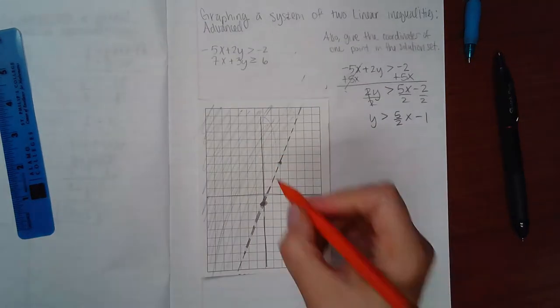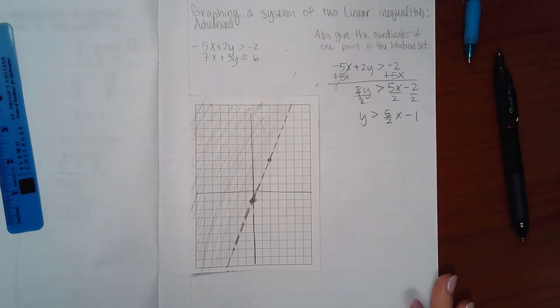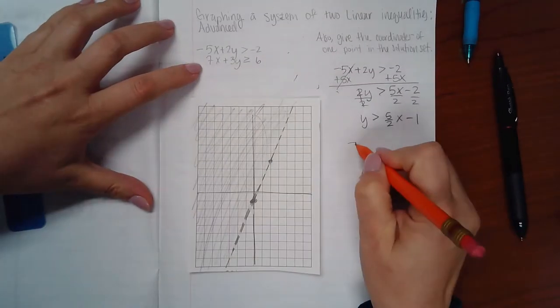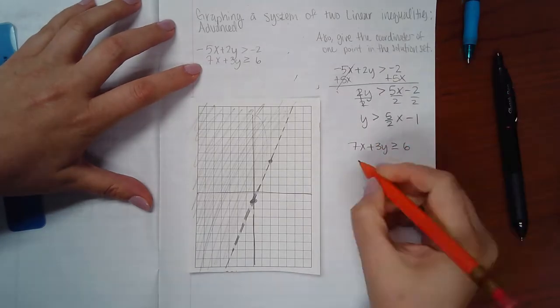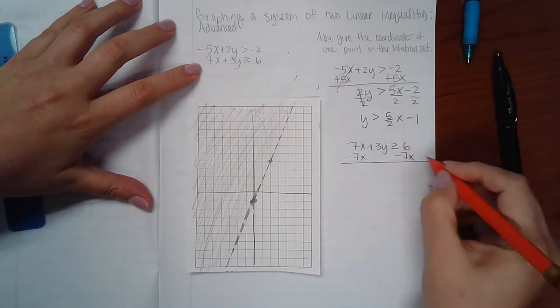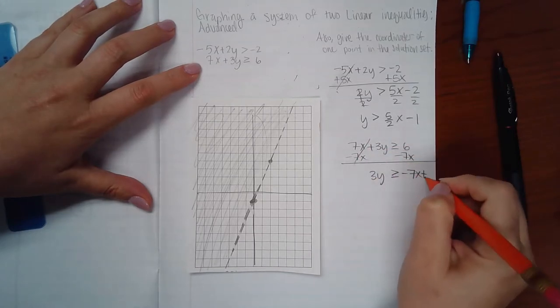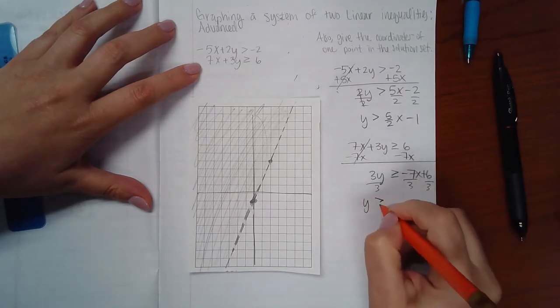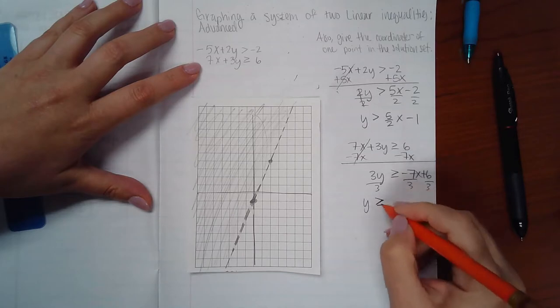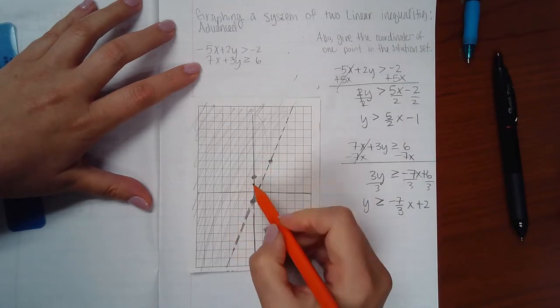Now the bottom equation: I'm going to minus 7x, leave my x's in front of my constants, and divide by three. I did not divide by a negative, so notice that my symbol stays exactly the way it was.